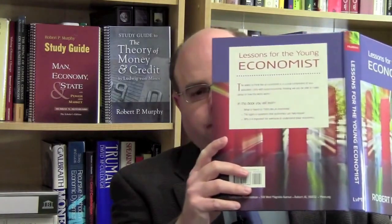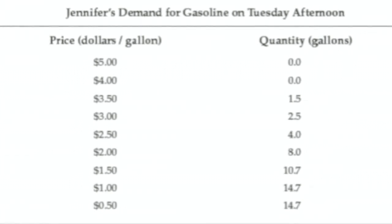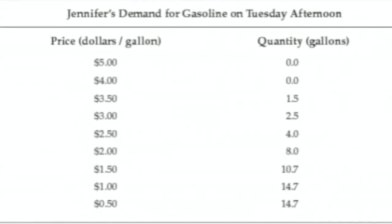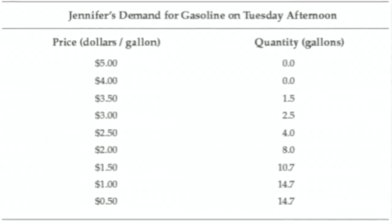The best way to continue is to start working with a particular numerical example. In your book, it's on page 148 where I start talking about demand, and on page 149 we get into a particular example — it has to do with Jennifer and her demand for gasoline on a Tuesday afternoon. The reason I gave it such a particular title is I'm trying to get you to see that this is just a snapshot.